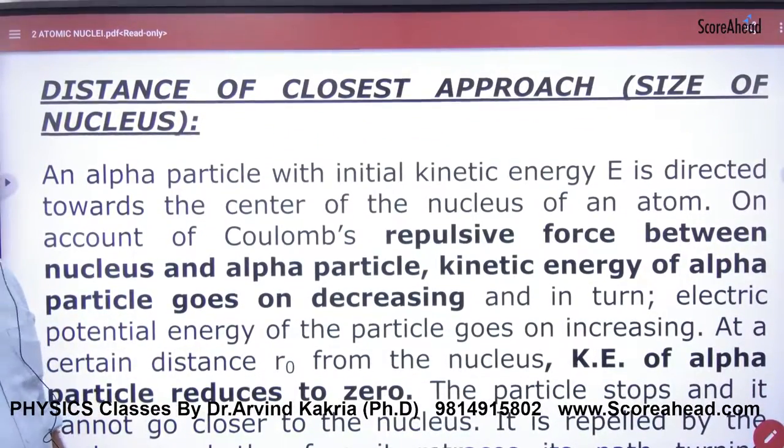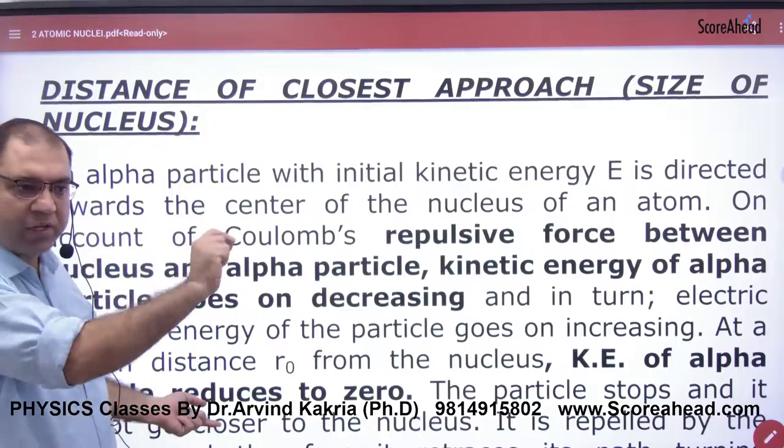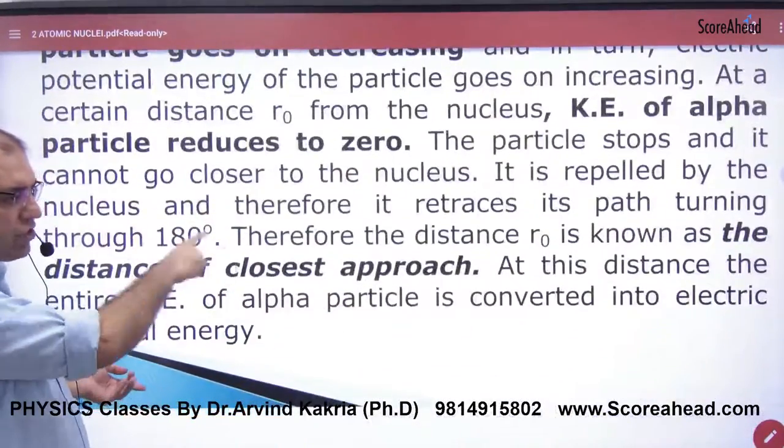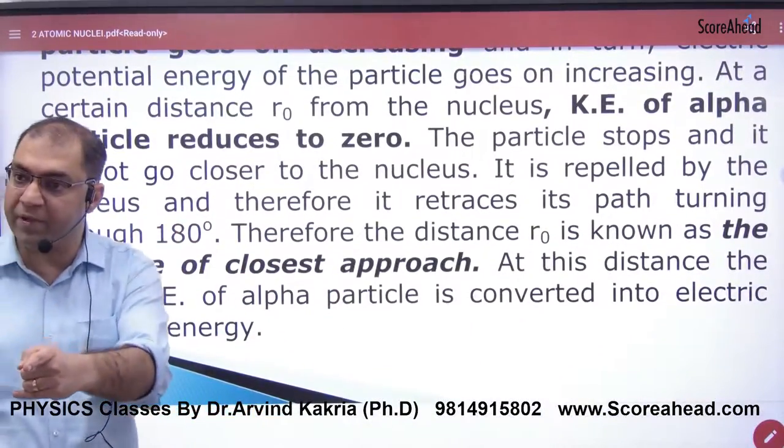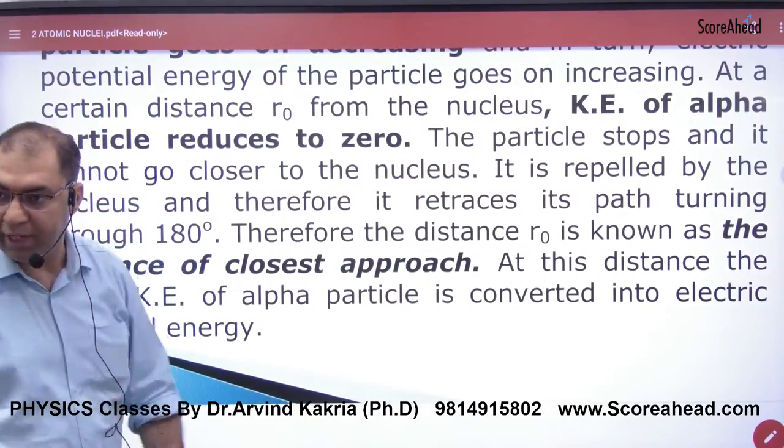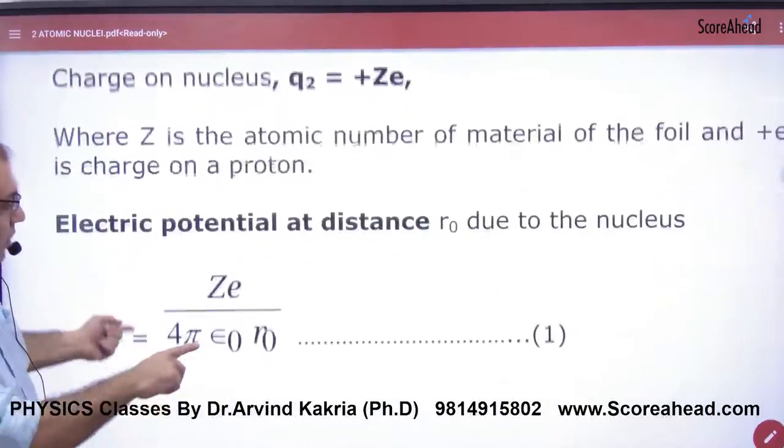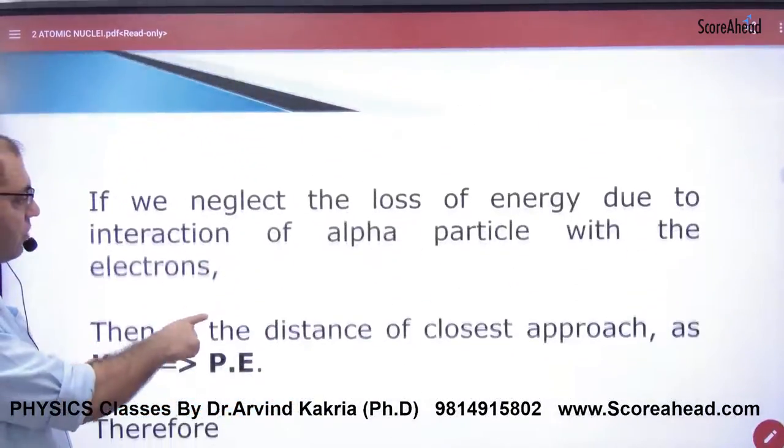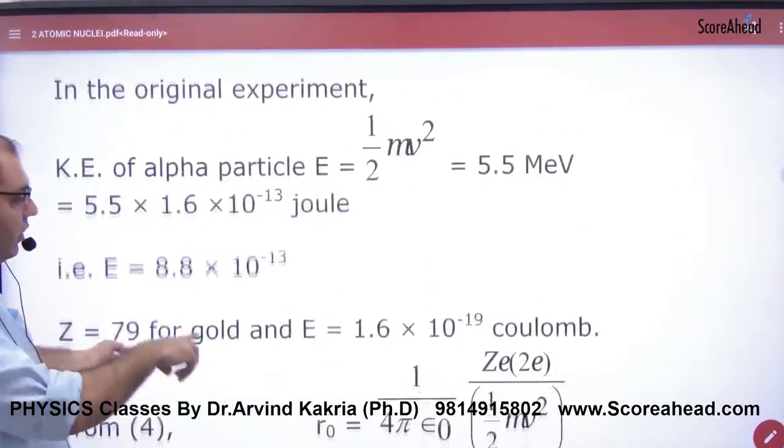Distance of closest approach, we have done this. Write from handwritten sheet, don't do it from here. You have to do it again. I will tell you in the paper. If you have not marked, you have to read it twice. You have to do it again. So write refer handwritten sheet. All this we have done, distance of closest approach.